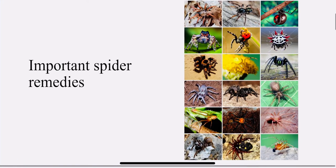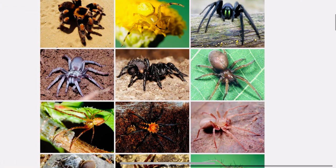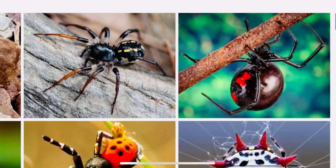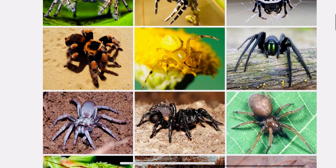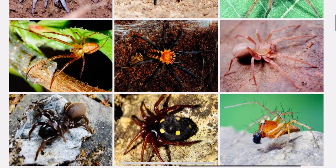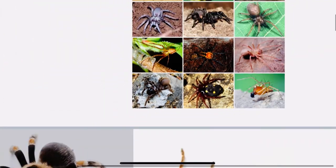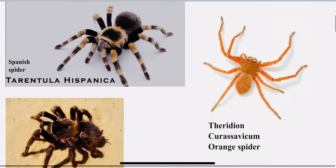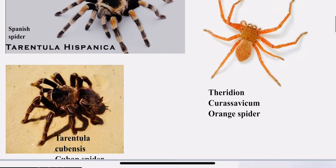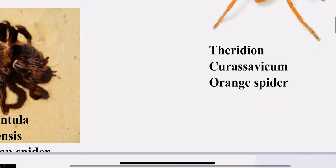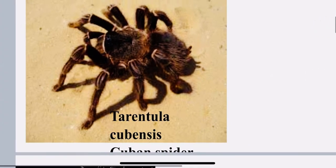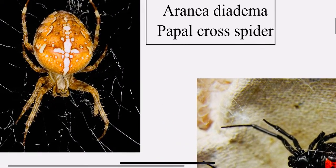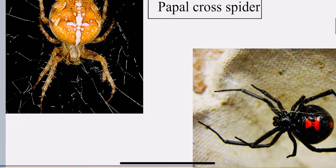The important spider remedies — you can see the different sizes and colors of spiders here. The important spiders: Tarantula hispanica, the Spanish spider. Theridion curassavicum, that is the orange spider. Tarantula cubensis. Aranea diadema, the papal cross spider. And this beautiful black and red spider is Latrodectus mactans, the American black widow. Tela aranerum.